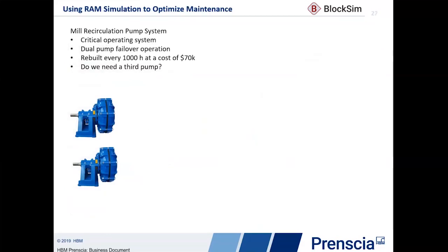I want to give you an example of how this is used so that you can see how a particular client might use this kind of information to help them make a better decision. We're going to look at a mill recirculation pump system. These pumps operate within a critical operating circuit within the mill. If these pumps go down and we stop circulating the fluid, basically the entire plant is down. So they have a dual pump failover operation — only one pump is expected to operate at a time, and the second pump only kicks in if the first pump fails.